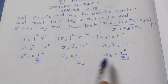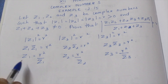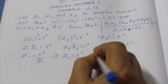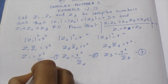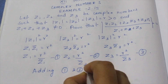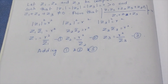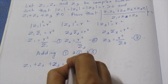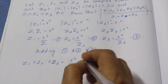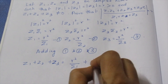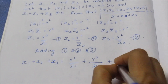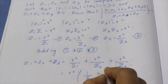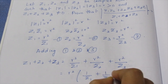Now we can add the three expressions. Z1 plus Z2 plus Z3 equals R squared over Z1-bar plus R squared over Z2-bar plus R squared over Z3-bar. Taking R squared as common, this equals R squared times (1 over Z1-bar plus 1 over Z2-bar plus 1 over Z3-bar).